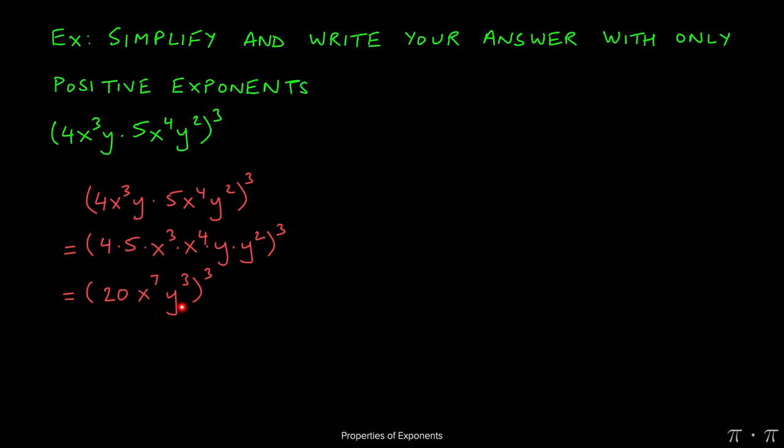Now, at this stage, nothing on the inside can be multiplied further. It is as simplified as it could be. At this stage, we can use the product to a power rule, which states that if you have products and a power raised on the outside, we can apply that power to each of these three terms individually.